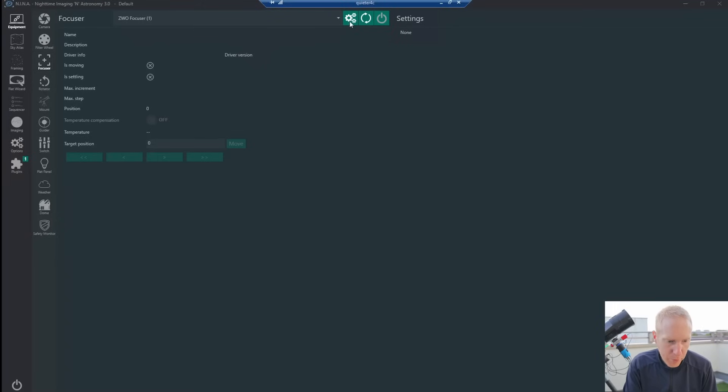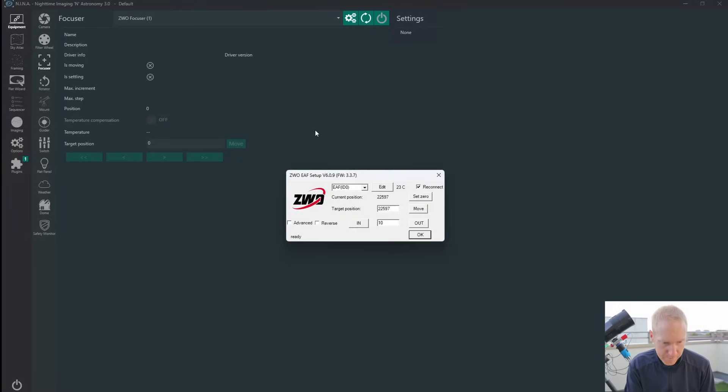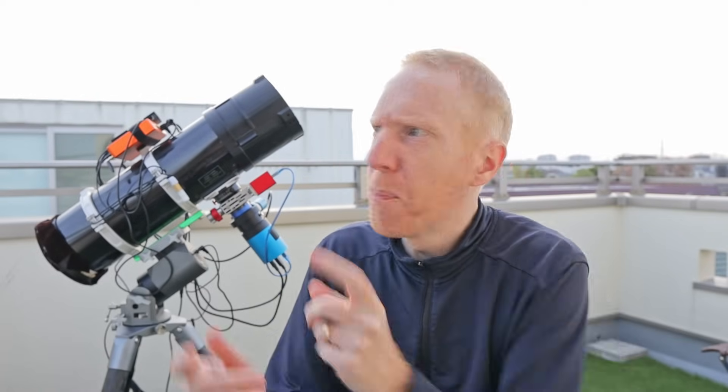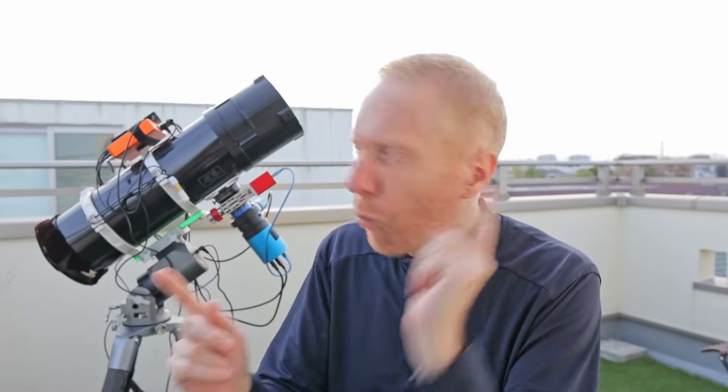So to show you from a Nina point of view, if I clicked on the settings for my ZWO focuser, I had this window here, and so my current position was set to zero, and then I also had an error message when I first opened the ASCOM driver, which was something like the position can only be between 1 and 60,000, which is like, duh, but it's at zero, what can I do about it?